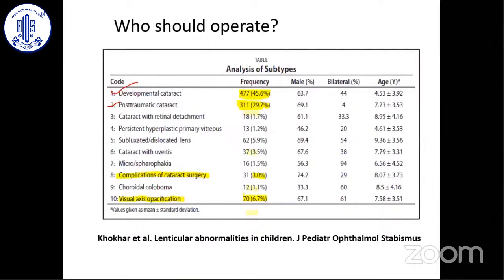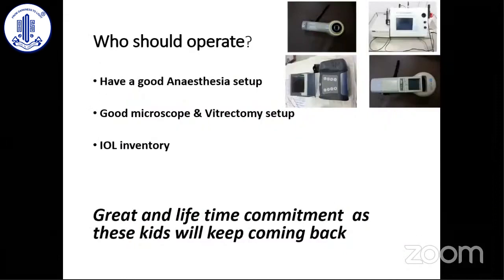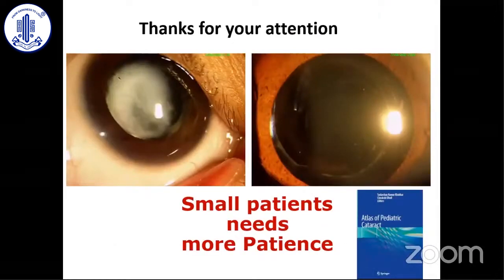Who should operate is very important. We reviewed 1,000 patients and 10% had problems — 3% due to complex surgeries done outside and about 7% had high IOP issues. So one in every ten patients may need reoperation. I prefer that those operating on children are trained pediatric ophthalmic surgeons, because it is not as simple as adult cataract. They must have a good anesthesia setup, a microscope with vitrectomy machine in perfect condition, an IOL inventory since the IOL is often decided on the table, and a lifetime commitment — these children keep coming back for EOS, suture removals, glasses changes, and squint surgeries. A small patient needs more patience.